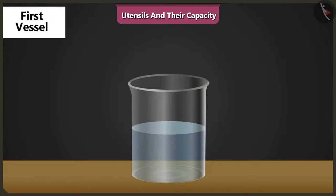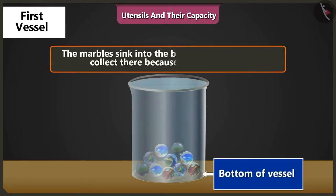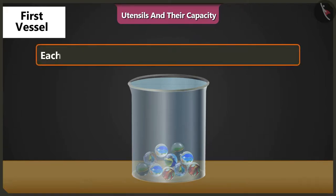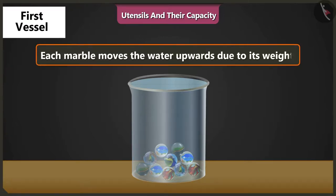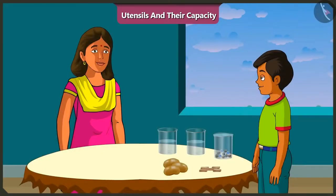Mishtu, when we drop the marbles in a vessel half filled with water, the marbles sink to the bottom of the vessel and get collected there due to their weight, and as a result, the water comes up. Yes, I understood. When marbles are dropped in the water, each marble moves the water upwards due to its weight. That brings the water upwards and the water level rises. Well said, Mishtu.